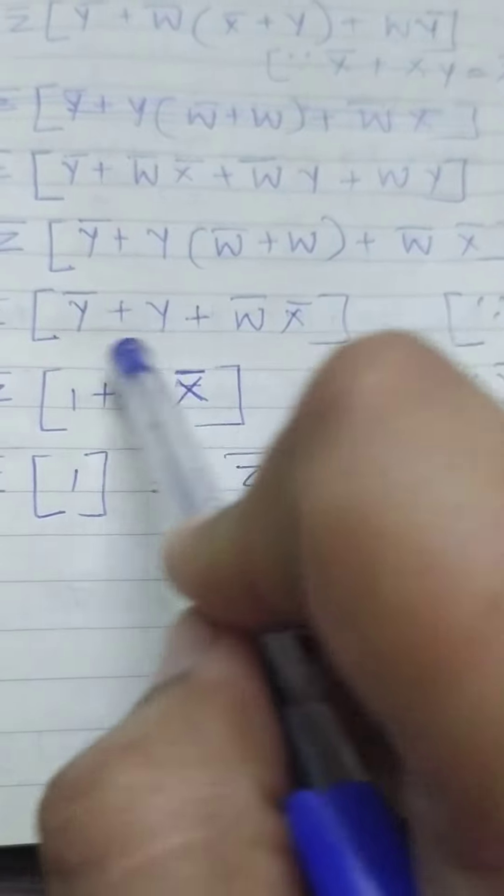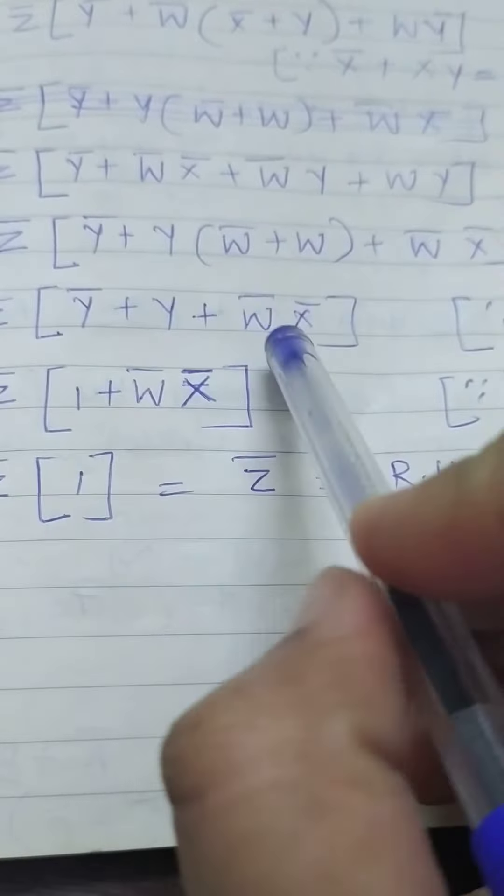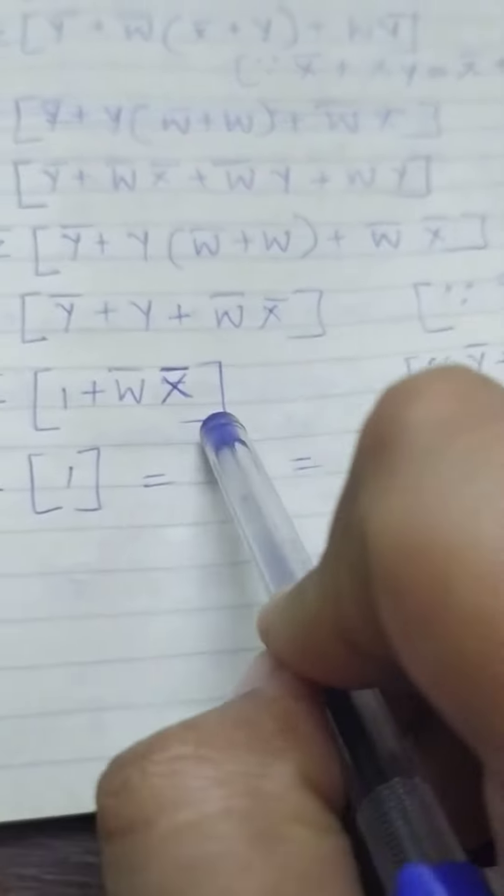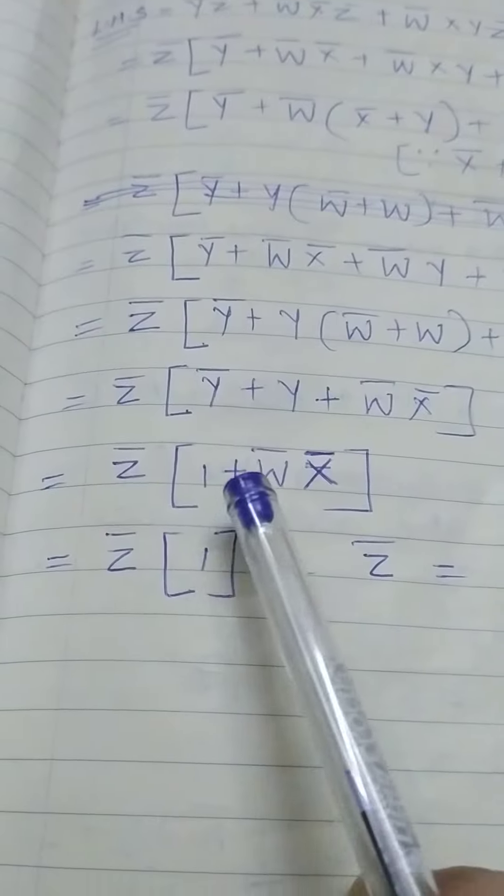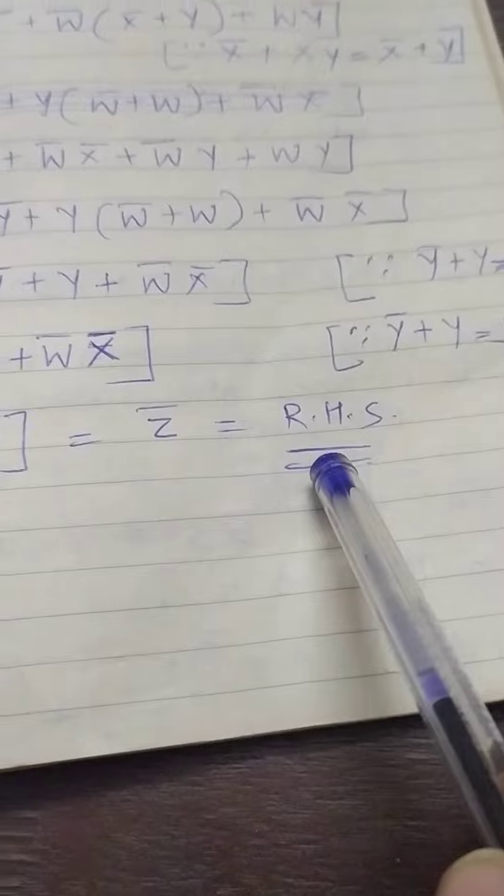In this way, this term is 1, and the rest is w̅ plus w̅x̅. So 1 plus w̅x̅ is nothing but simply 1 again.